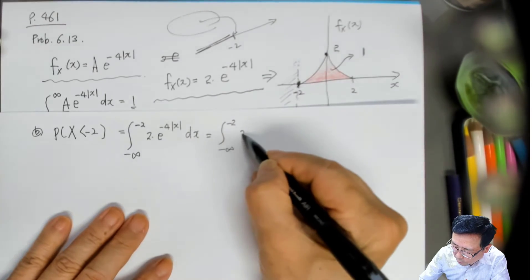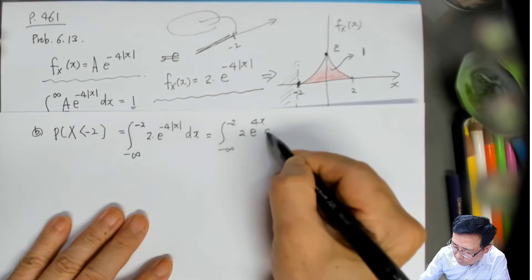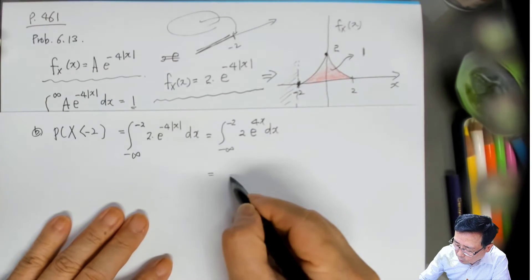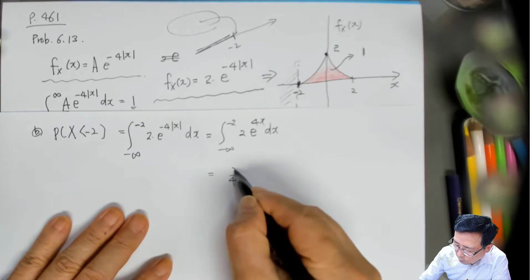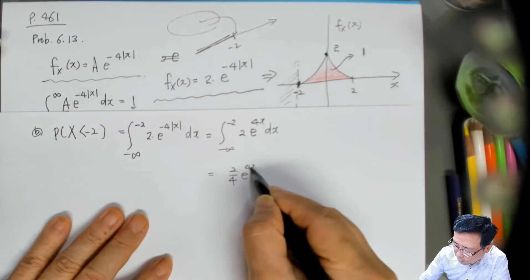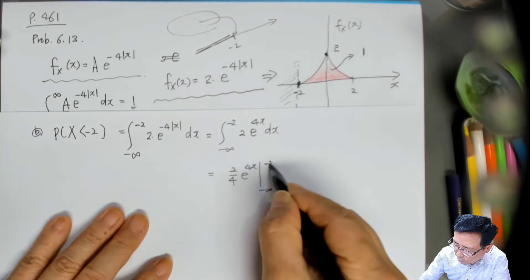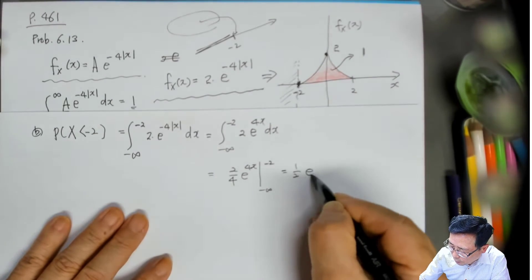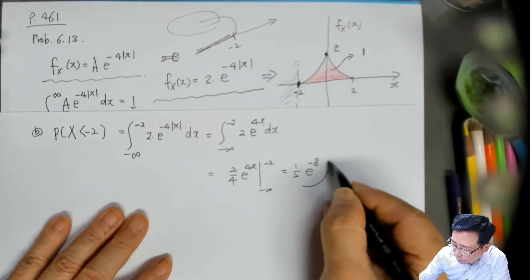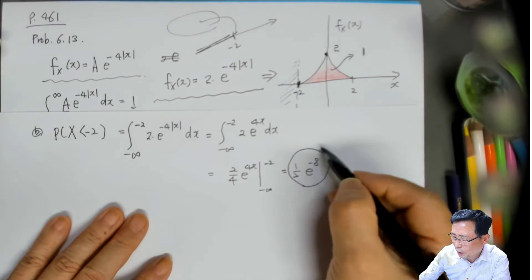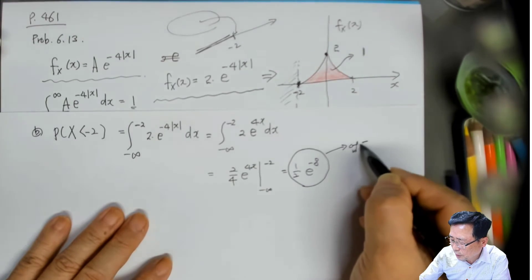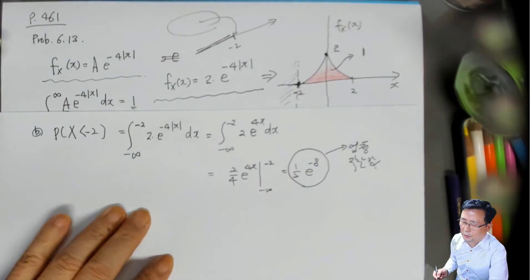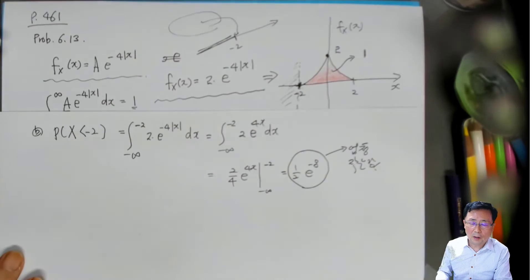x가 -2보다 작을 확률은 -∞에서 -2까지 2 · 2^(-4|x|) dx를 적분하는 거예요. x < 0이므로 2^(4x)이 됩니다. 적분하면 (1/4) · 2^(4x)|_{-∞}^{-2}가 나와서 (1/2) · 2^(-8)이 되고, 이건 엄청나게 작은 값입니다. 그림에서도 이 부분은 아주 작게 나타날 수 있잖아요. 이런 식으로 b번은 구할 수 있구요.